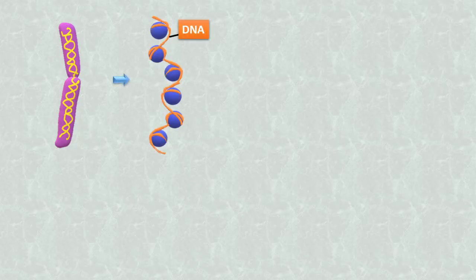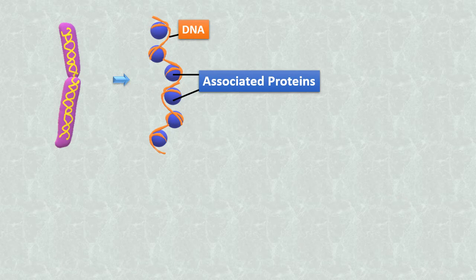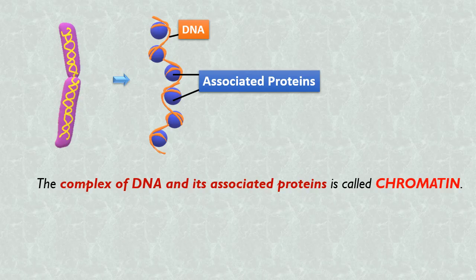Each chromosome contains a single linear double-stranded DNA molecule. These DNA molecules of each chromosome are associated with many proteins. These proteins maintain the structure of chromosomes and help control the activity of genes. The building material of chromosome is DNA and its associated proteins.